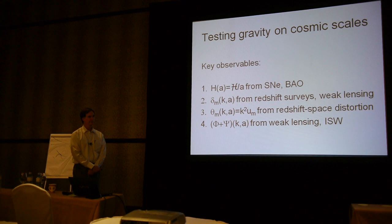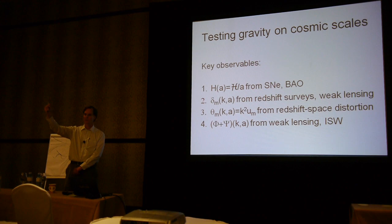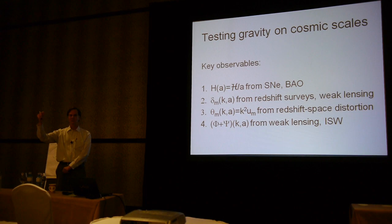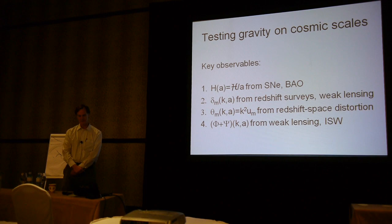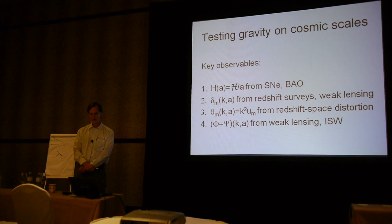Similarly, for peculiar velocities—if it's hard to measure the expansion history, it's even harder to measure deviations from uniform Hubble flow. One approach is redshift space distortions: the clustering along the line of sight uses redshift as a proxy for distance, while clustering transverse to the line of sight differs statistically because the radial distance is the Hubble velocity plus the peculiar velocity. These redshift space distortions can be used to infer transfer functions for the divergence of the velocity, a very powerful probe of the growth of structure in principle.